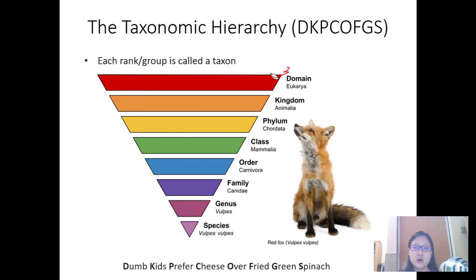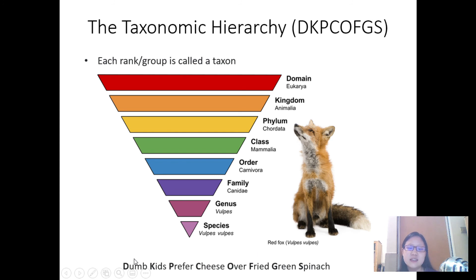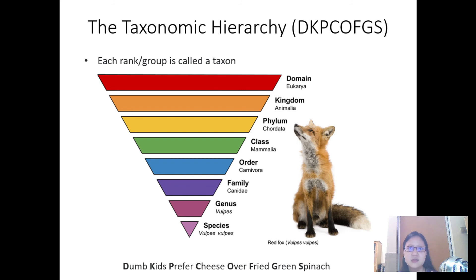Each rank and taxon name you have to remember. Here's an acronym to help: 'Dumb kids prefer cheese over fried green spinach.' D stands for domain, K for kingdom, P for phylum, C for class, and so on. If you find this boring, there are many more creative — and sometimes more memorable — versions out there. The crazier it is, the easier it is to remember. If you come up with your own, put it in the comments.